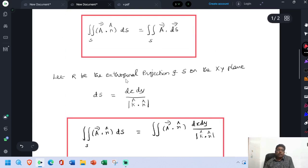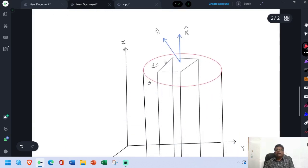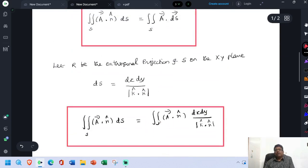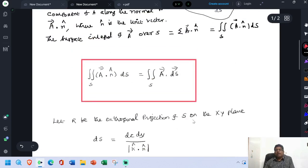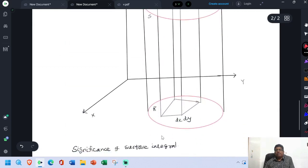Let R be the orthogonal projection of S on the xy plane. See here, this is the surface. Then this is our xy plane. This is x axis, this is y axis, this is xy plane. If R be the orthogonal projection of S on the xy plane, the projection of the surface on the xy plane is R, the orthogonal projection.